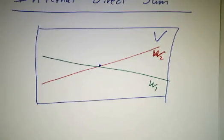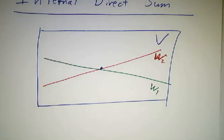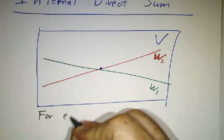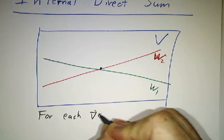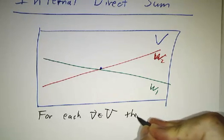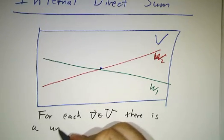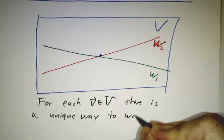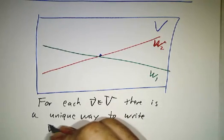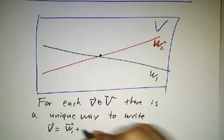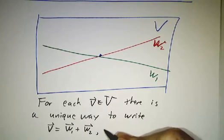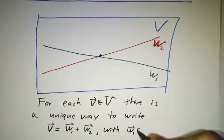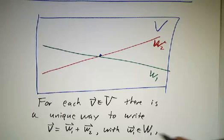Okay, and let's suppose that we have a very special property. The special property is that for each vector in the big space, there is a unique way to write it as the sum of two vectors with little w1 being in big W1, and little w2 being in big W2.